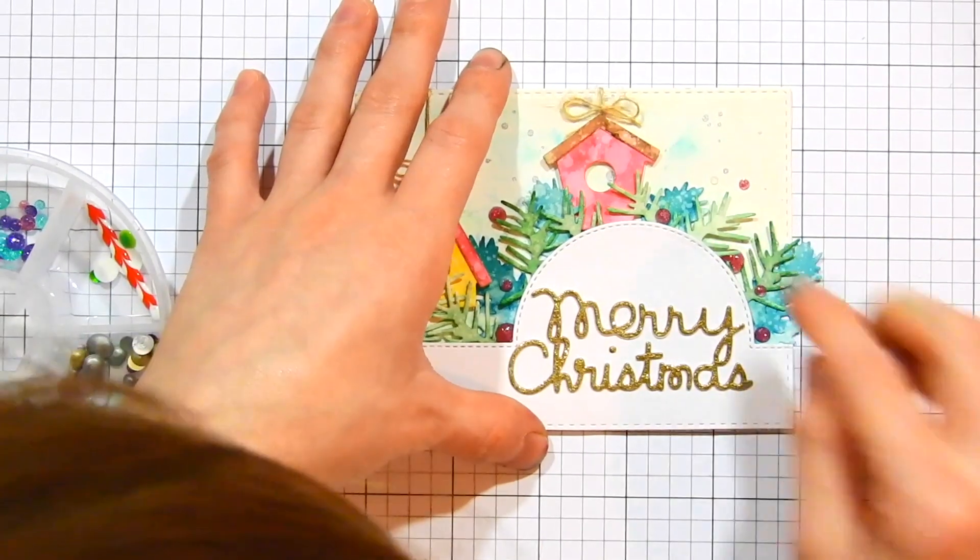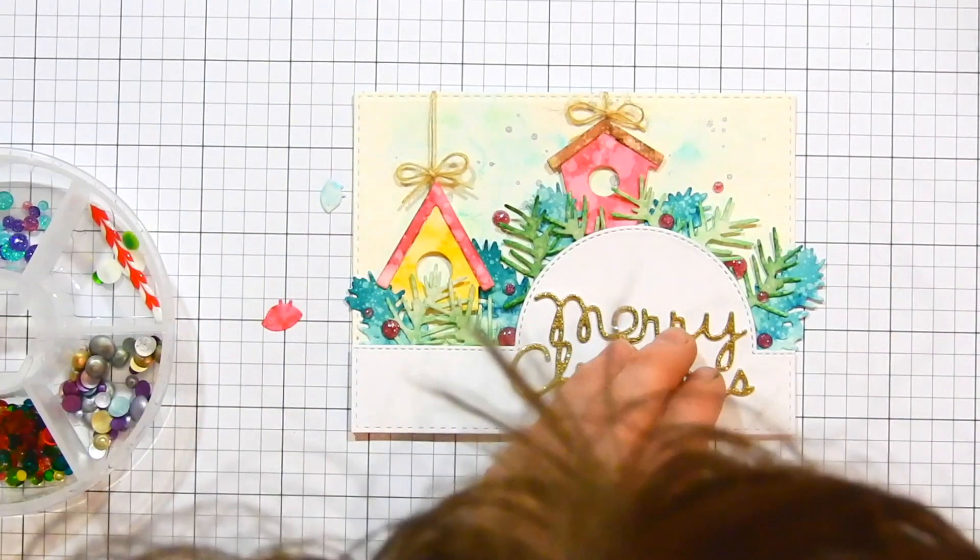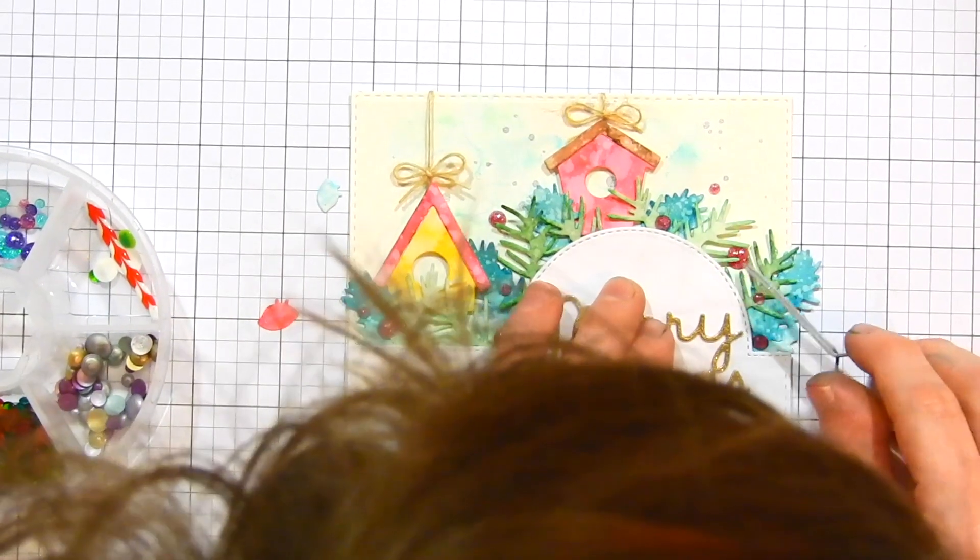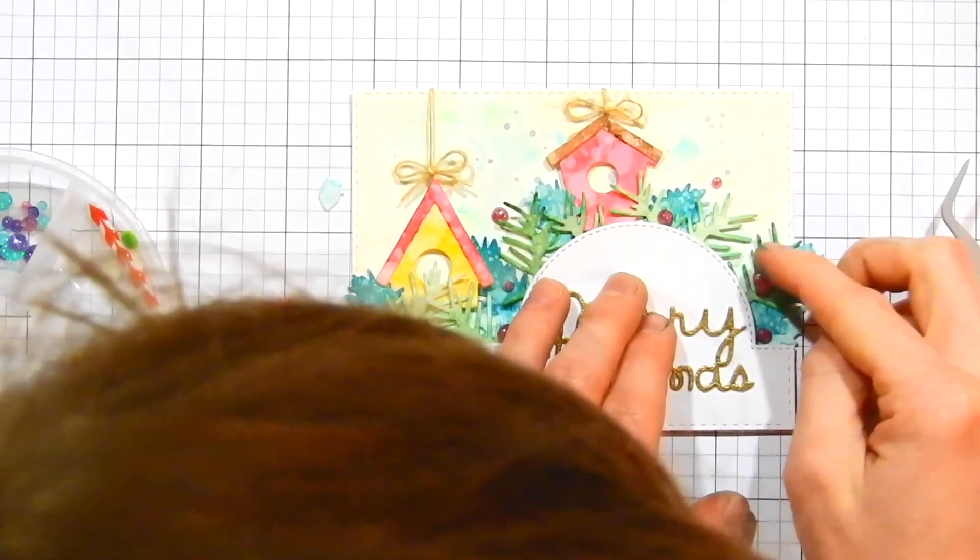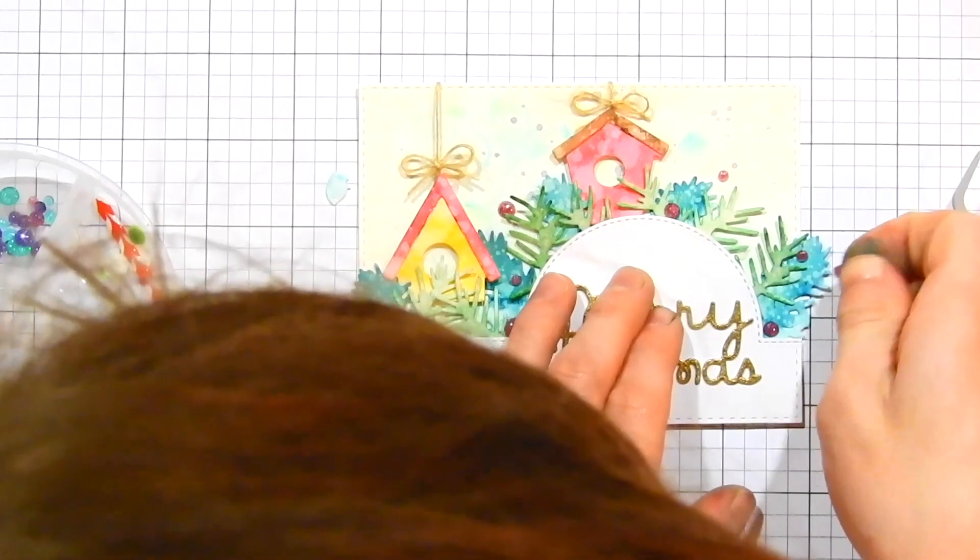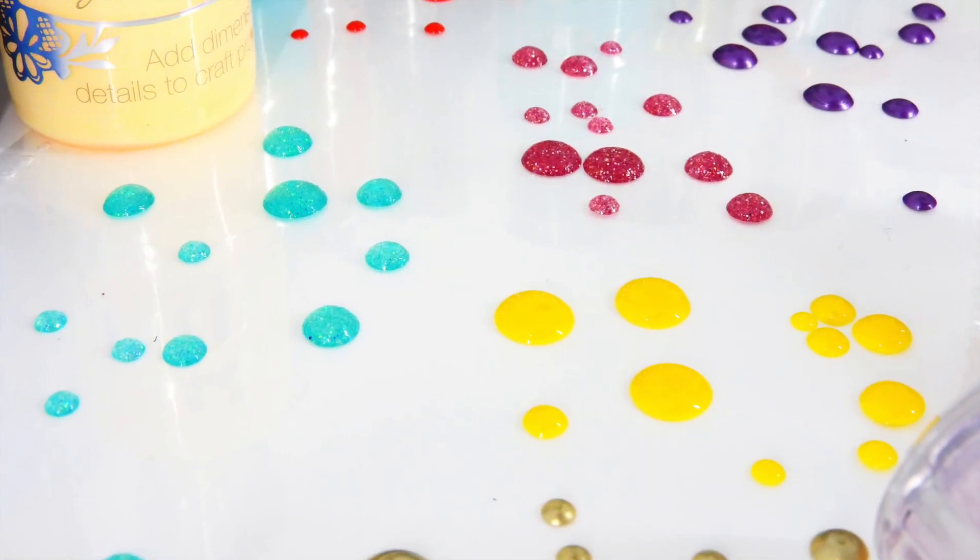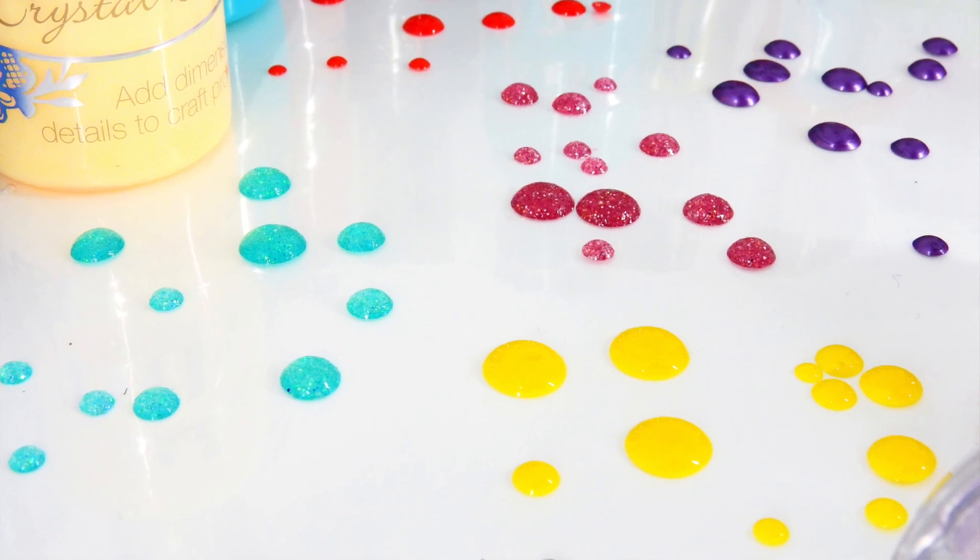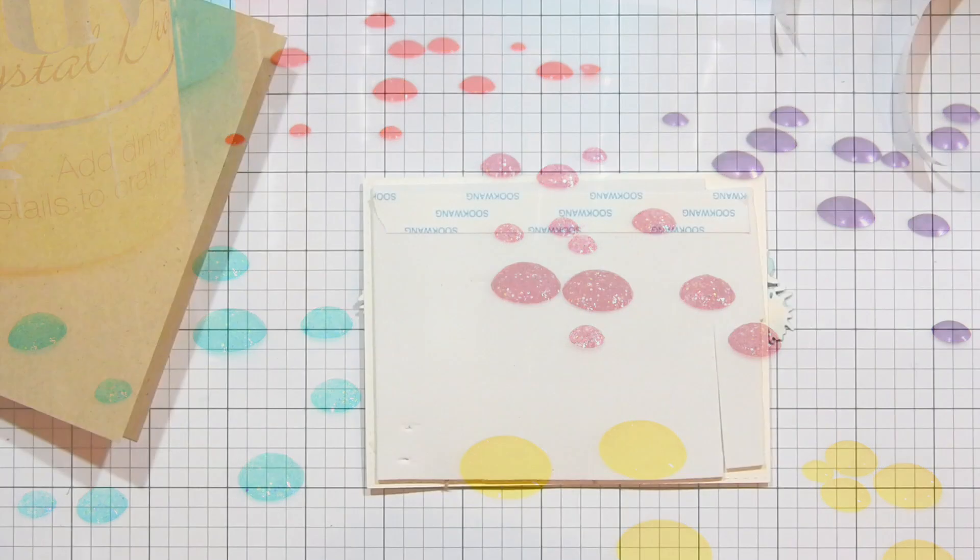If you want to learn more about creating Nuvo crystal drops like these—these are created with the glitter drops—be sure to check out the video that I'm linking up at the top of the screen, because I just created a whole series of videos for the Simon Says Stamp blog that features some of these fabulous Nuvo embellishment products from Tonic Studios. The glitter drops are part of that video series, so be sure to check that out.